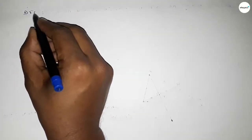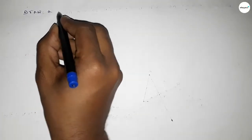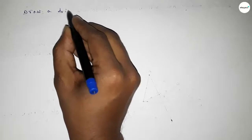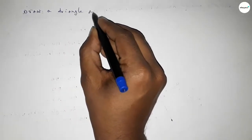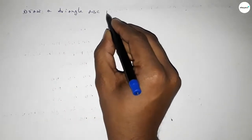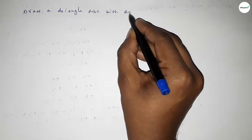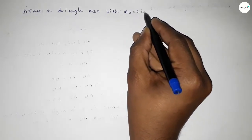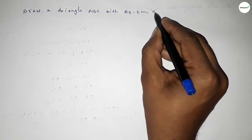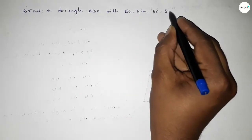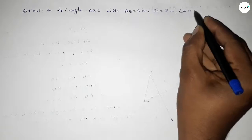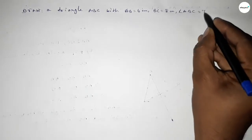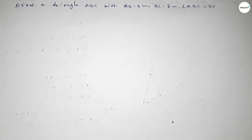Hi everyone, welcome to SI Share Classes. Today in this video we have to draw a triangle with AB equal to 6 centimeters, BC equal to 8 centimeters, and angle ABC equal to 70 degrees. So let's start the video.